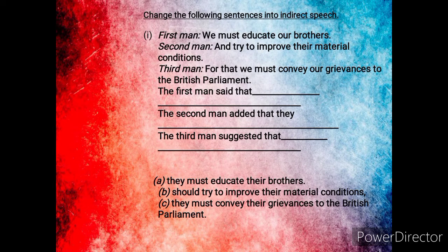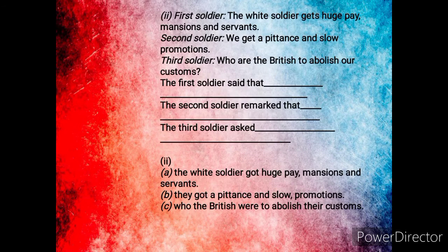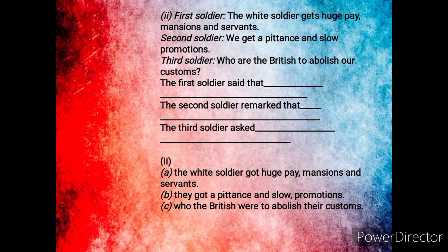The third man suggested that they must convey their grievances to the British Parliament. Last one — first soldier: 'The white soldier gets huge pay, mansions and servants.' So the first soldier said that the white soldier 'gets' — the base form — is converted into past form 'got' — huge pay, mansions and servants. Second soldier: 'We get a pittance and slow promotion.' So the second soldier remarked that 'they got a pittance and slow promotions' — 'get' is converted into 'got.'